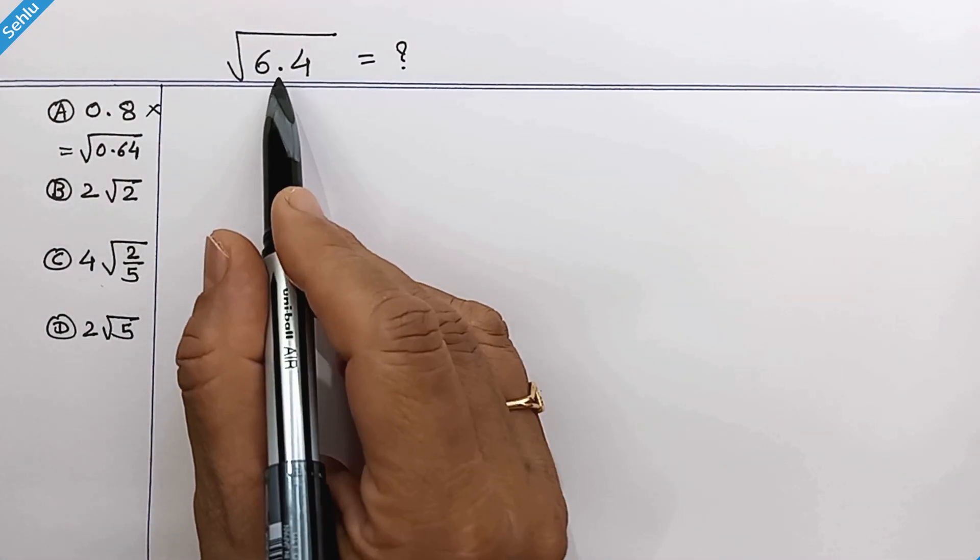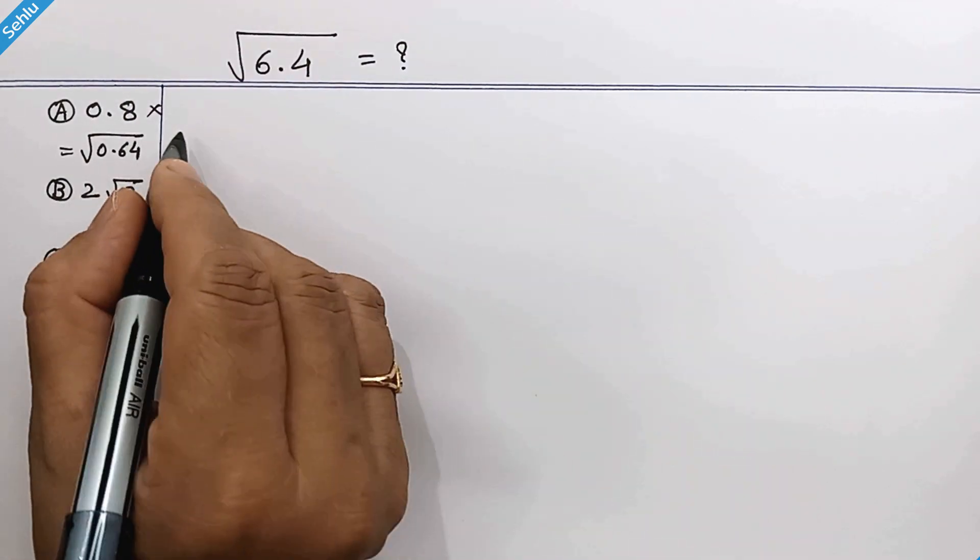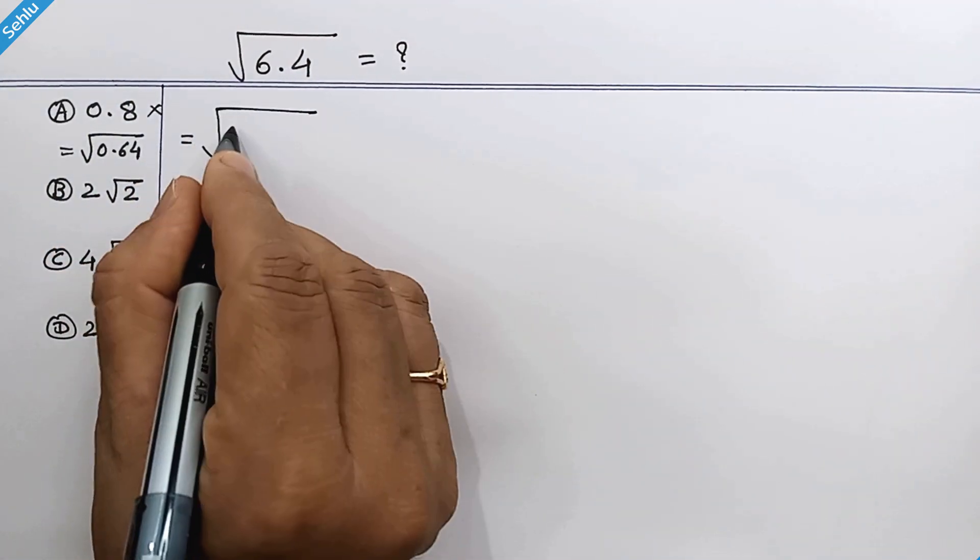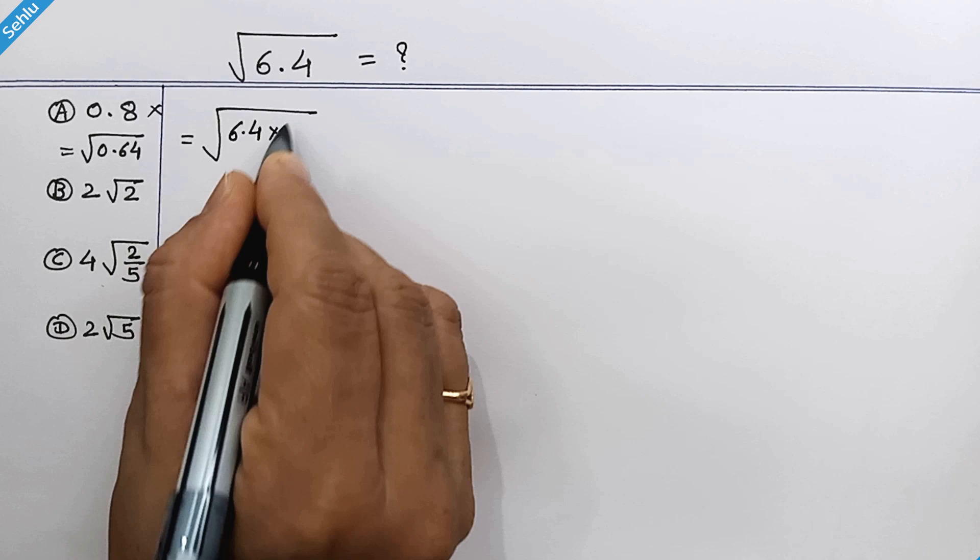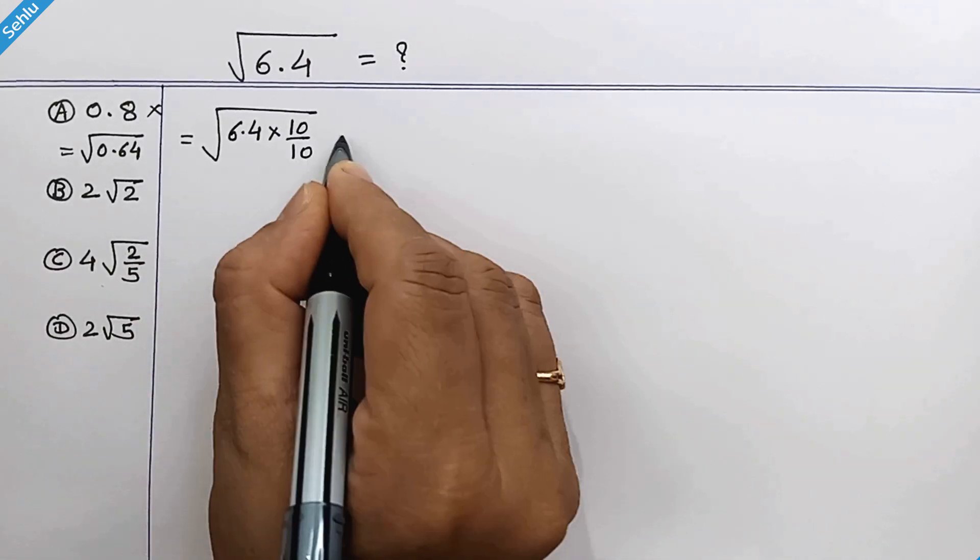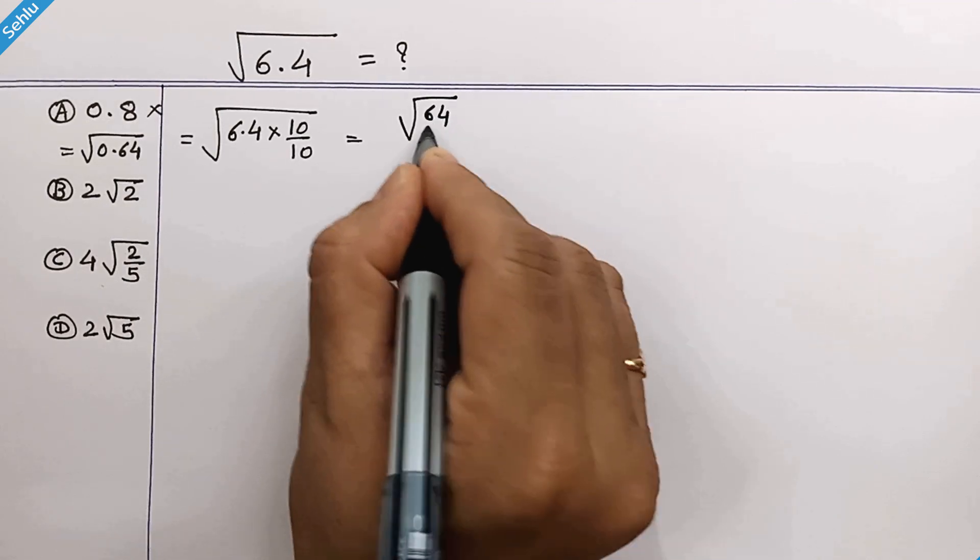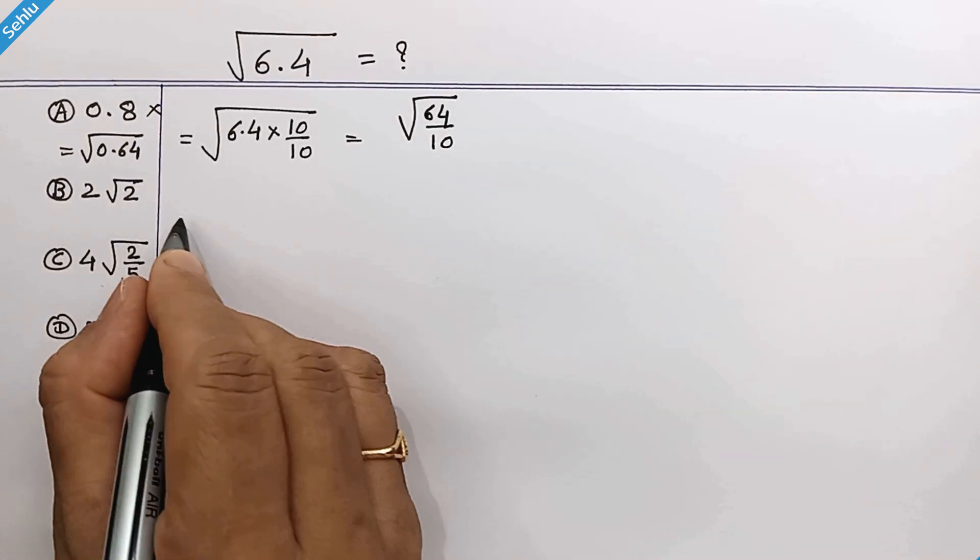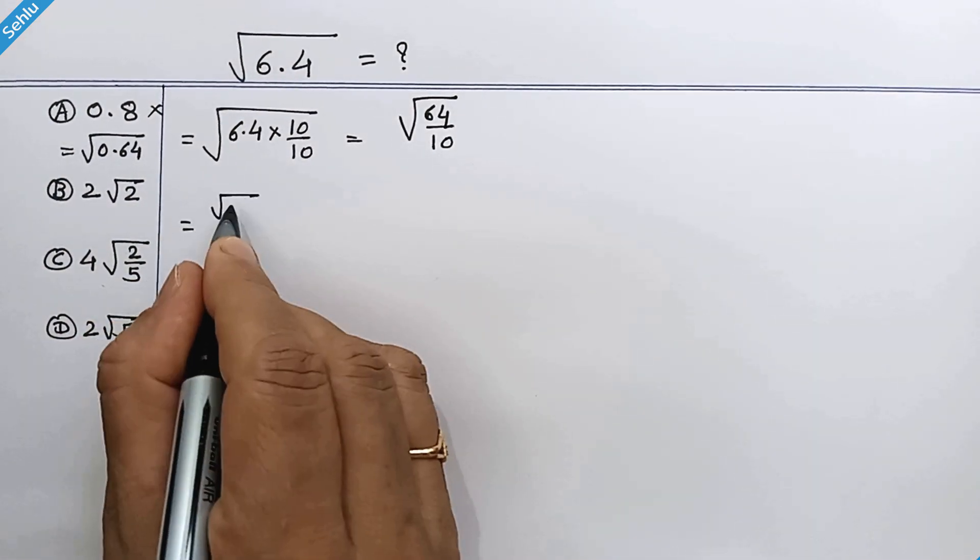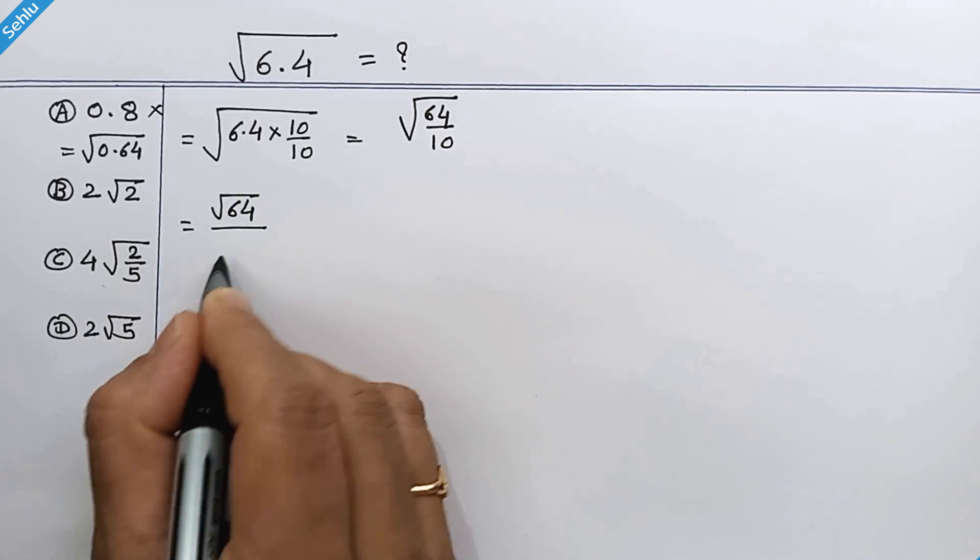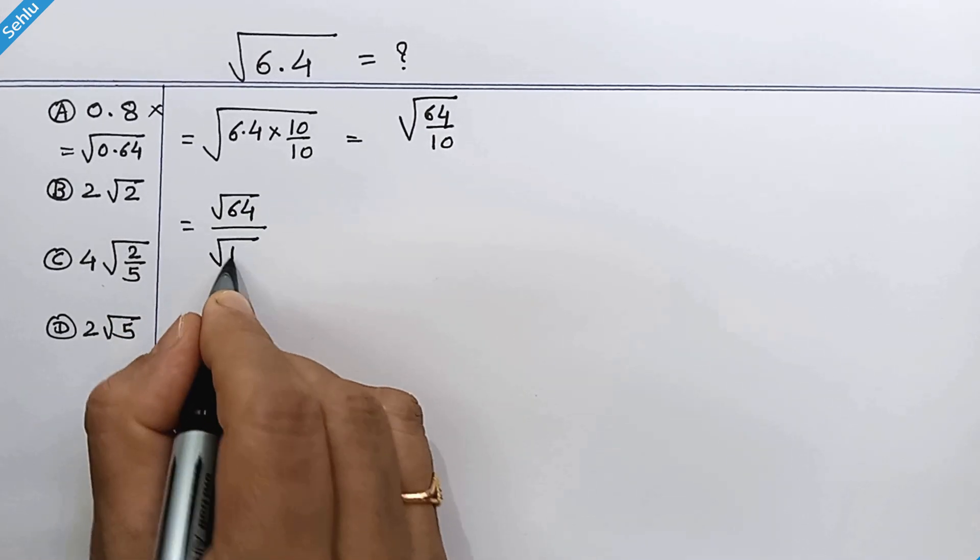We need to remove this decimal point, and for that let's multiply by 10 over 10. So it will be square root of 64 over 10. We can write this as square root of 64 over square root of 10.